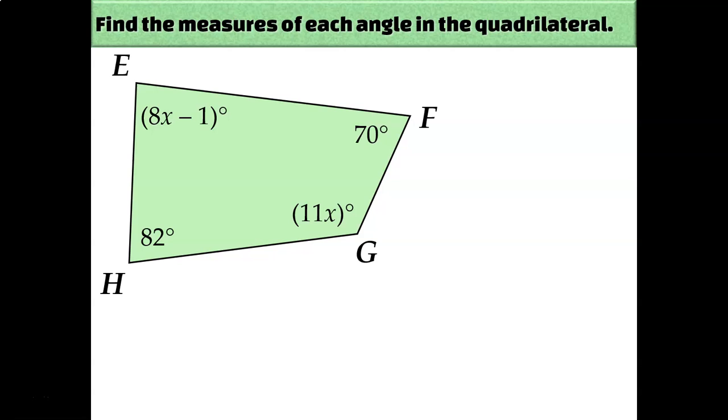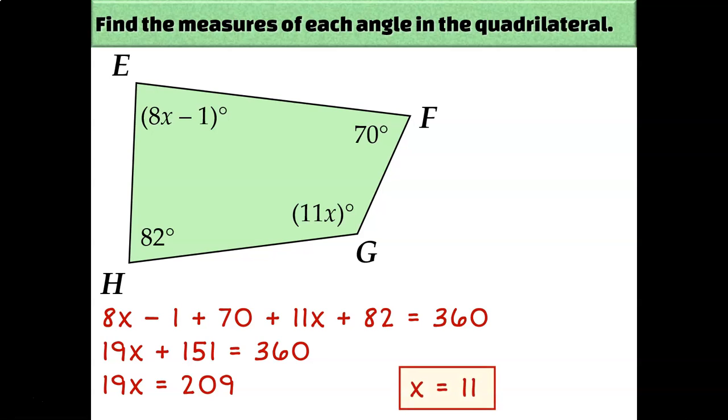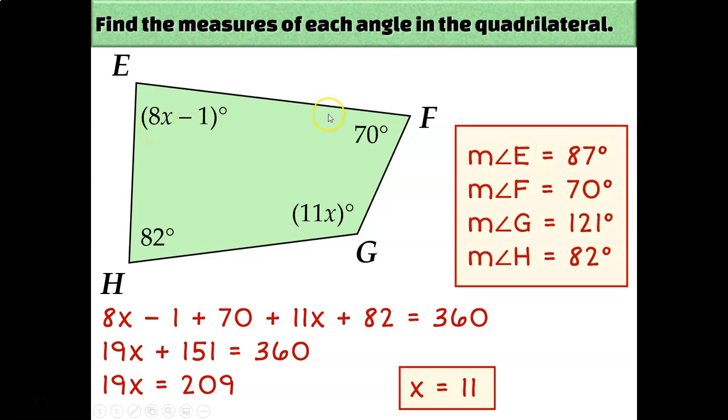We can use that same idea for more complicated problems like this one. Just add all four of those angle measurements together and set it equal to 360. Combine like terms, subtract 151, divide by 19, so x must be equal to 11. So in order to figure out the missing angle measurements, we'll just take 11 and plug it in. So 8 times 11 minus 1, that's 88 minus 1, so 87. And then F we already knew was 70. 11 times 11 is 121 for the measure of angle G, and H we already knew was 82.